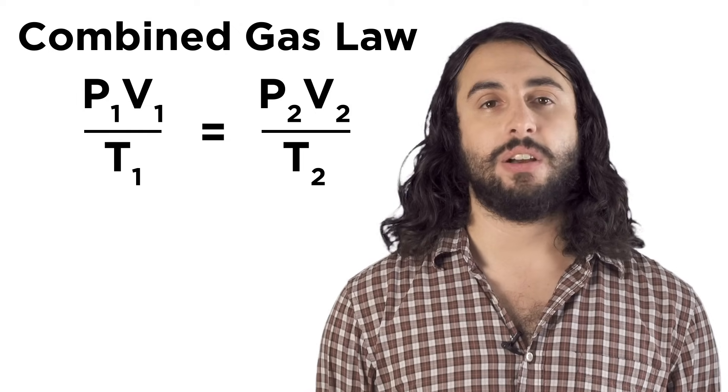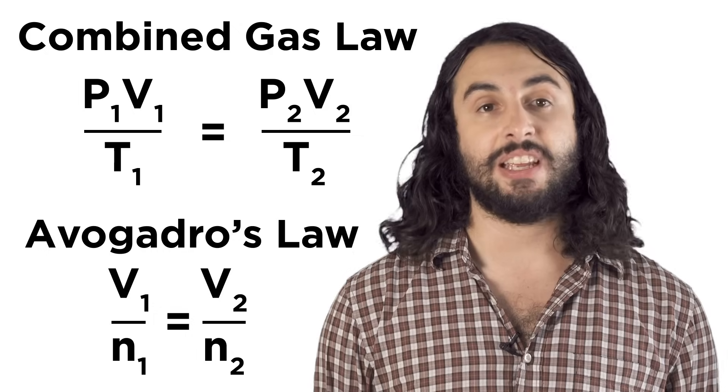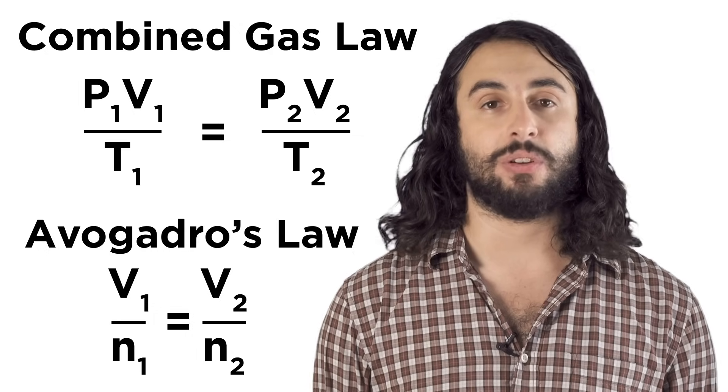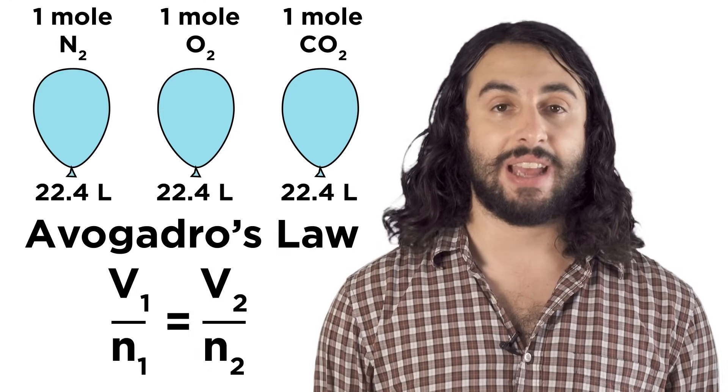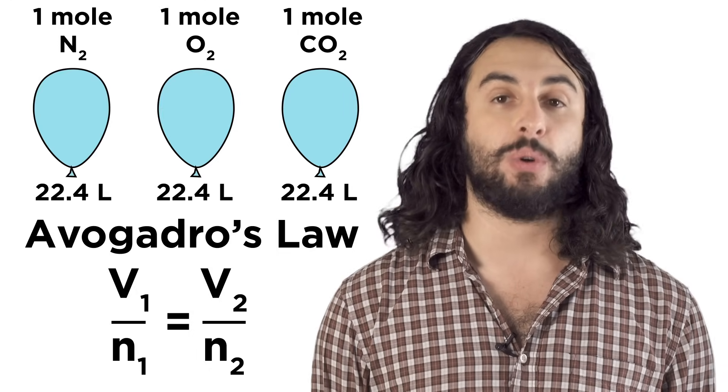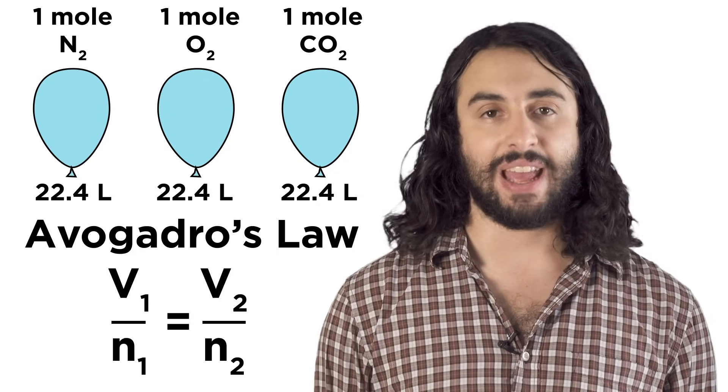The combined gas law is like a combination of Boyle's and Charles. Avogadro's law says that equal volumes of gases at the same temperature and pressure contain the same number of molecules. Specifically, that one mole of ideal gas occupies 22.4 liters at standard temperature and pressure, regardless of the identity of the gas.